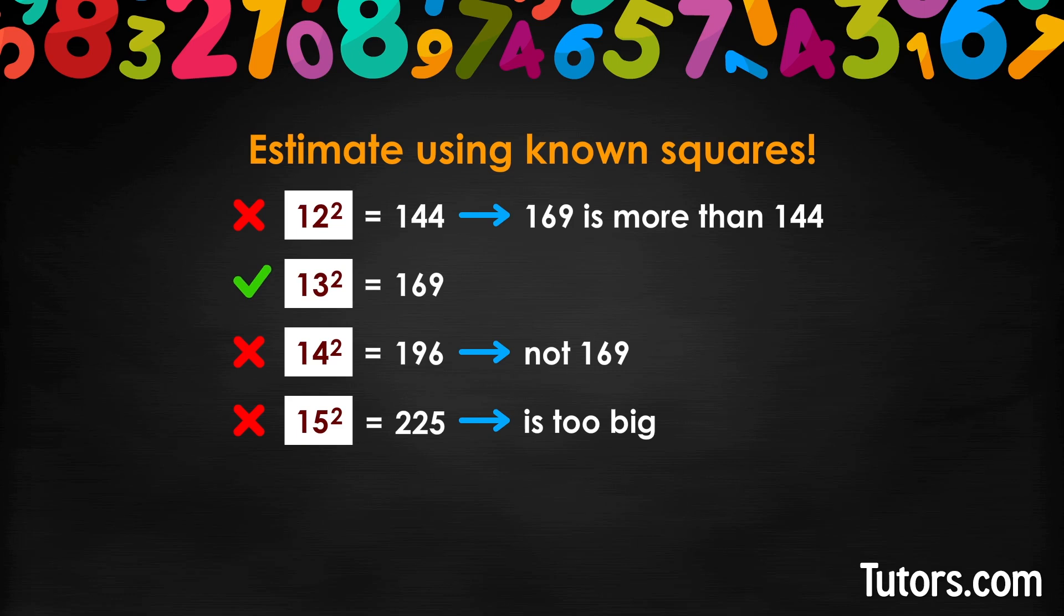You can verify that you have the correct square root of a number by multiplying the number times itself to see if it equals the target number. 13 times 13 equals 169.